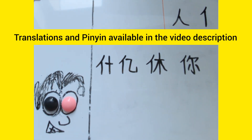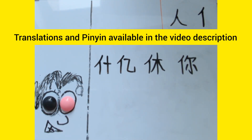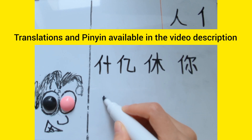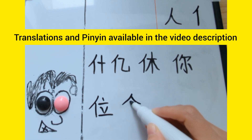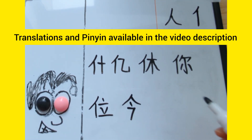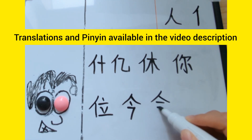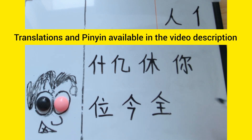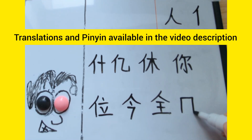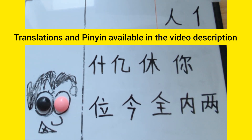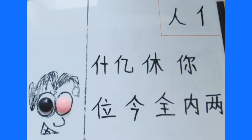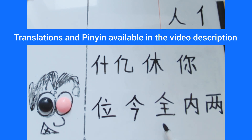The characters formed using Ren as a component include: 识, 意, 修, 你, and 味.